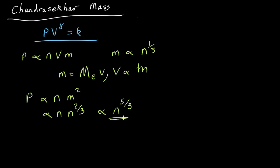If you have a fixed number of electrons, then the number per unit volume is proportional to one over the volume. So for a white dwarf, PV to the five-thirds is a constant. We have n proportional to 1/V, so P proportional to 1/V^(5/3), which gives us PV^(5/3) equals k.